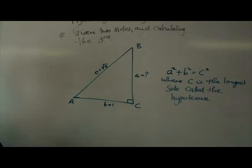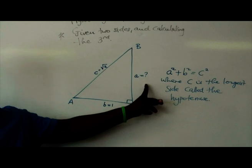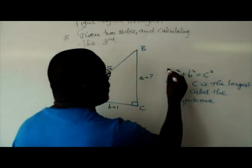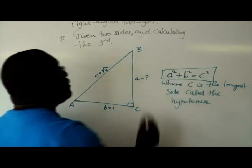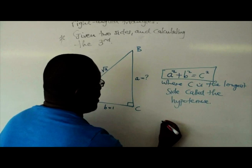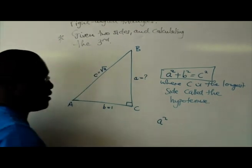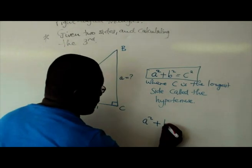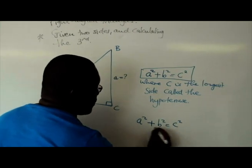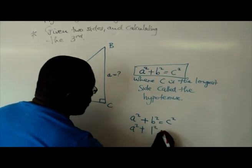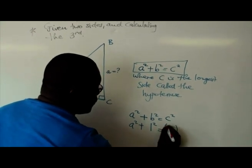So we're given two sides and we're asked to find the third side. So we have to go back to Pythagoras theorem and say what are we given? We're given the hypotenuse. So a² is what we don't know plus b² is equal to c². So a² + 1² is equal to √2 squared.